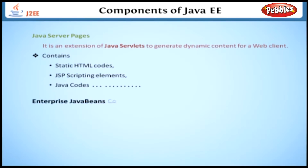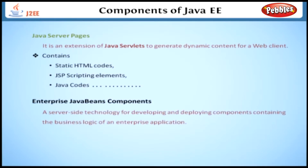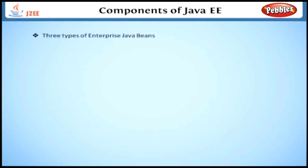Enterprise JavaBeans Components: The Enterprise JavaBeans architecture is a server-side technology for developing and deploying components containing the business logic of an enterprise application. Enterprise JavaBeans components are scalable, transactional, and secure. There are three types of Enterprise JavaBeans: Session Beans, Entity Beans, and Message-Driven Beans.